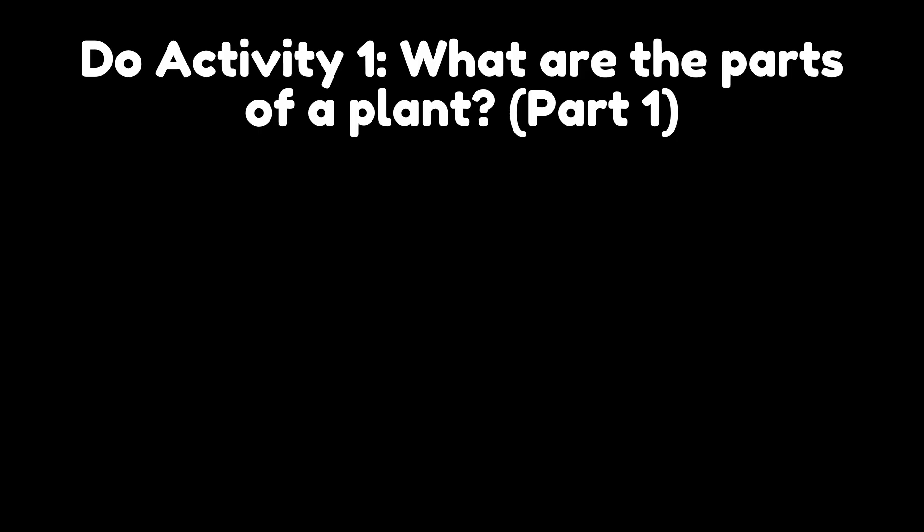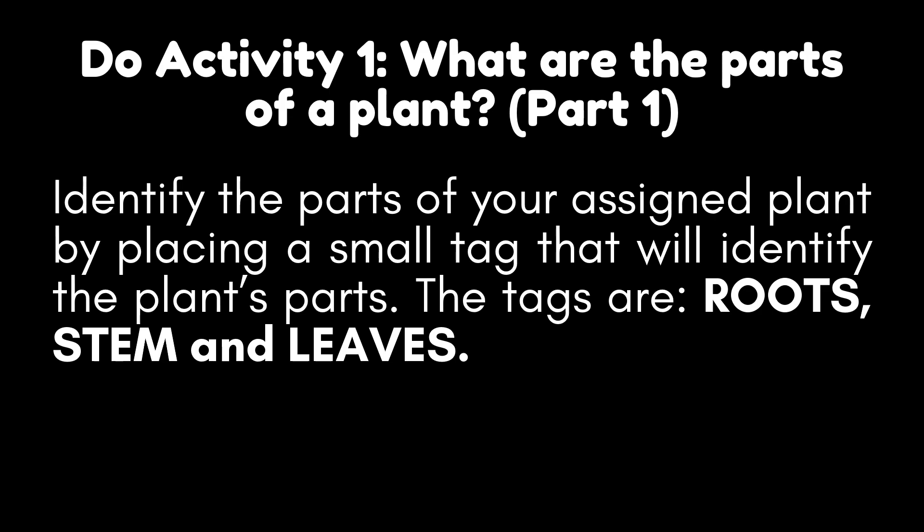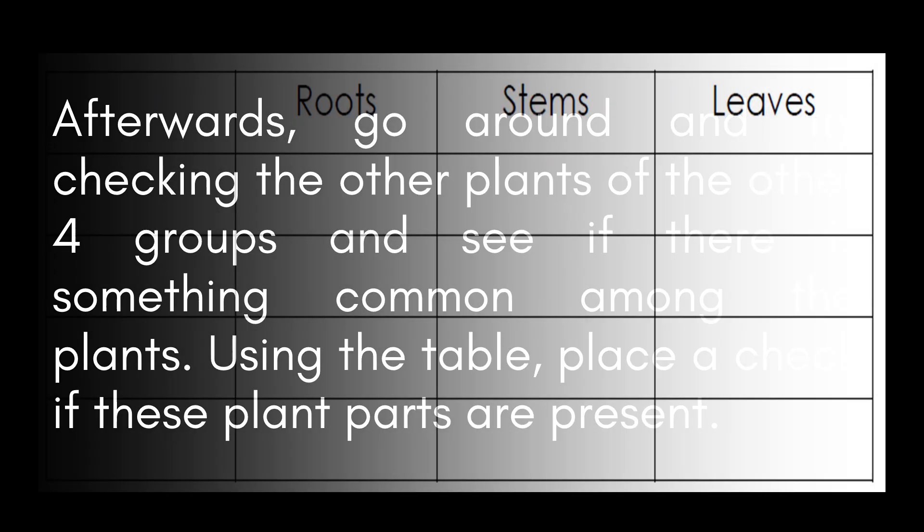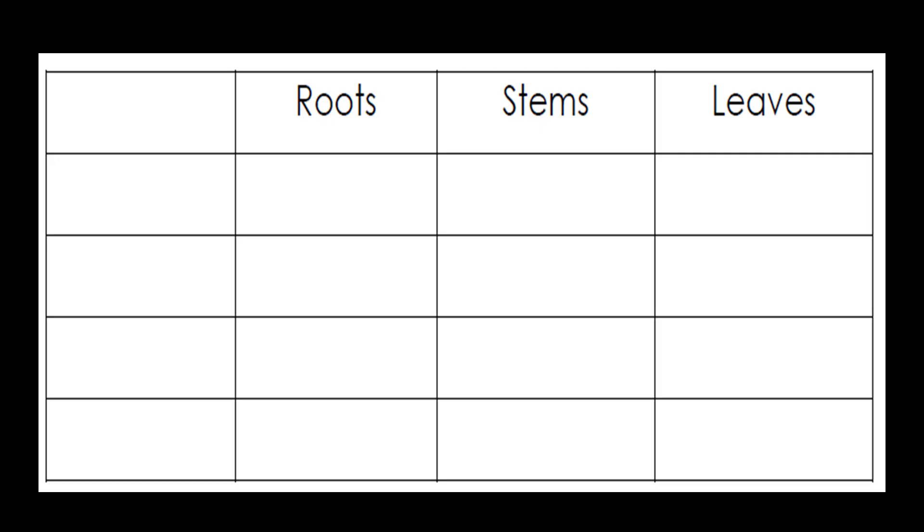Do activity number 1: What are the parts of plants? Part 1 — identify the parts of your assigned plant by placing a small tag that will identify the plant parts. The tags are roots, stem, and leaves. Part 2 — afterwards, go around and check the other plants of the other four groups and see if there is something common among the plants. Using the table, place a check if these plant parts — roots, stem, and leaves — are present.